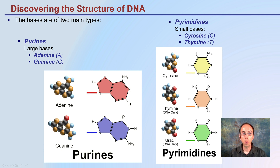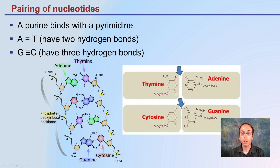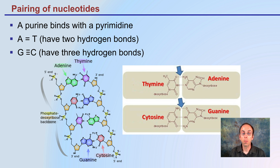Cytosine is found in both. Now, what's important to remember is that a purine will always bind with a pyrimidine. Adenine binds with thymine — A binds with T — and they have two hydrogen bonds between them. G and C bind together; guanine and cytosine have three hydrogen bonds, so they hold their structure just a little bit stronger. How I try to remember it: G and C both have these semicircle curves, so they fit together very nicely with three hydrogen bonds versus adenine and thymine only having two.